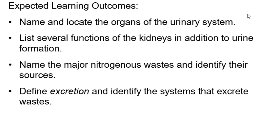We're going to learn about the different organs of the urinary system — there aren't very many, so that'll be easy. Then we'll spend the majority of our time on how the kidneys make urine, which is very complicated. We'll also talk about nitrogenous waste, where it comes from — mostly from the breakdown of amino acids — and how you excrete and get rid of waste.